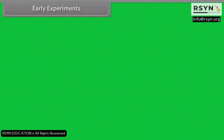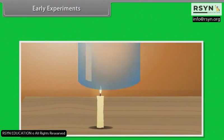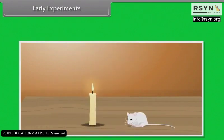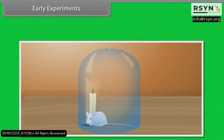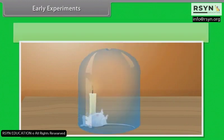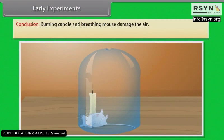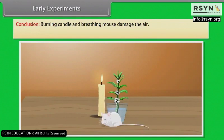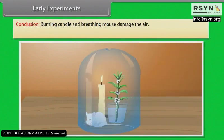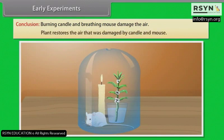In Priestley's experiment, he placed a candle in a closed jar and it was extinguished. He then placed a mouse in the bell jar and the mouse became suffocated. He concluded that the burning candle and breathing mouse damaged the air. When he placed a mint plant in the closed jar, both the mouse and candle survived. He concluded that the plant restored the air that had been damaged by the candle and mouse.